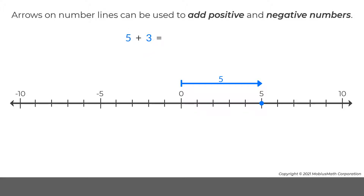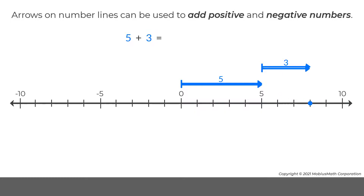To represent 5 plus 3, an arrow to represent 3 is drawn starting at 5. This arrow is in the positive direction and has a length of 3. These two arrows combine to represent 5 plus 3 equals 8.